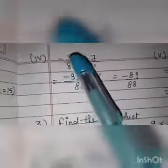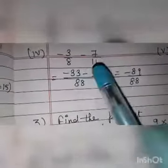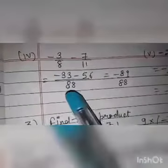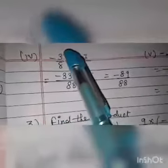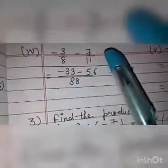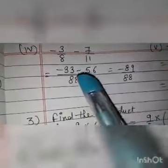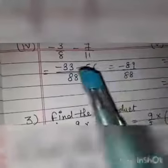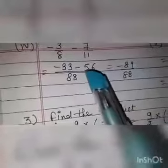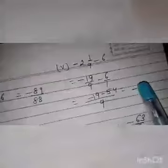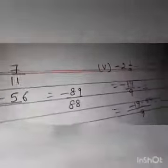Fourth part is minus 3 by 8 minus 7 by 11. I will take LCM of 8 and 11, that will be 88. In 8's table, 88 comes at 11; multiply 11 by parallel number 3 to get 33, minus. In 11's table, 88 comes at 8; multiply 8 by parallel number 7 to get 56. Both numbers have the same sign, so we add: 33 plus 56 is 89. The sign from the bigger statement is minus, so the answer is minus 89 by 88.